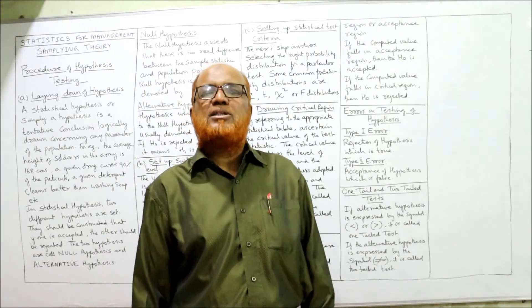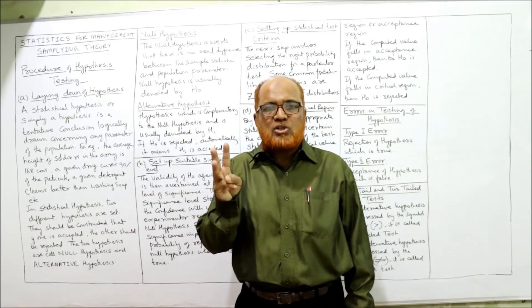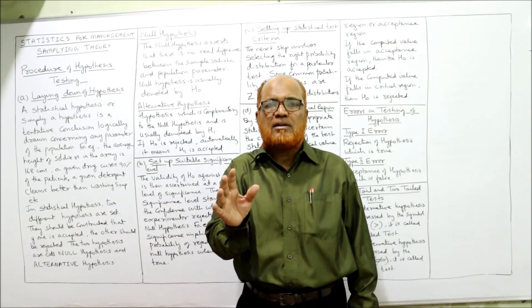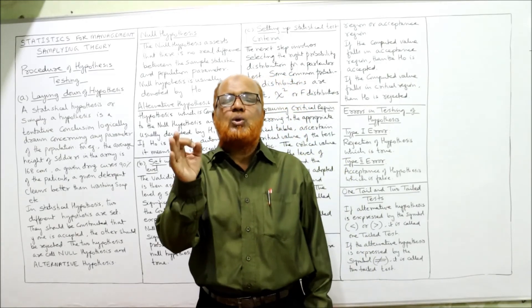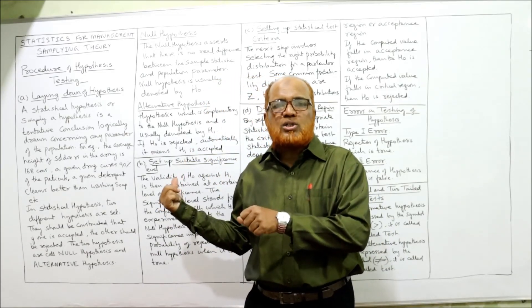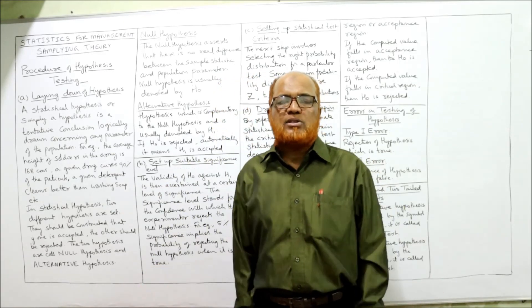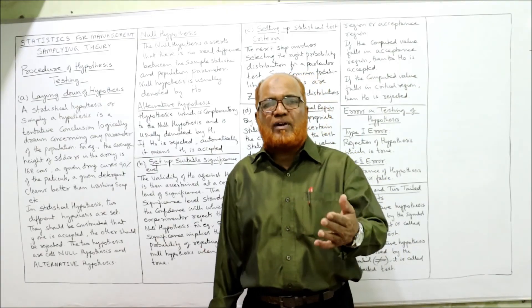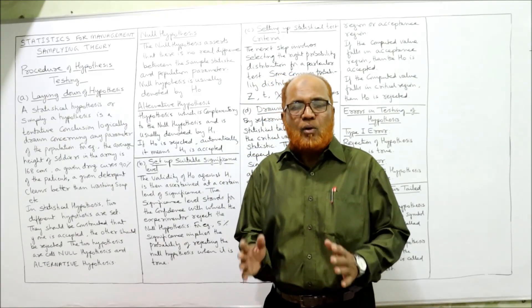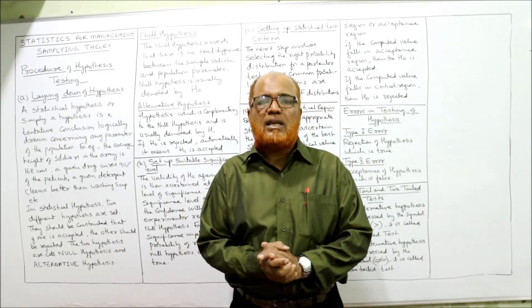This completes the full theory on sampling across three videos. Watch them once, twice, or thrice to get all the points clear. In examinations, theory questions can be asked, and the problems are also based on this theory. If you haven't watched the theory, you will find it difficult to understand hypothesis testing, level of significance, one-tail test, and two-tail test in the problems. The problems will continue in the next video.